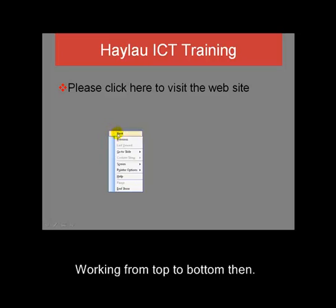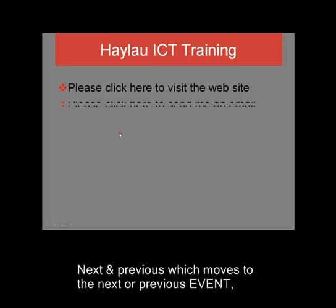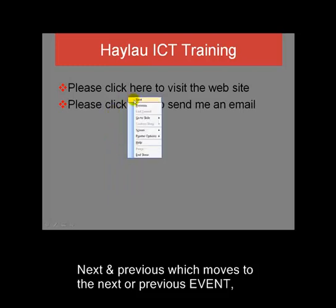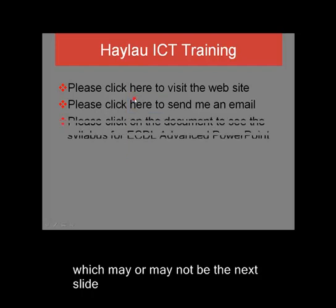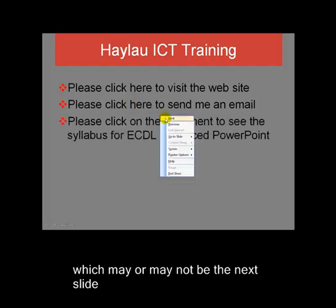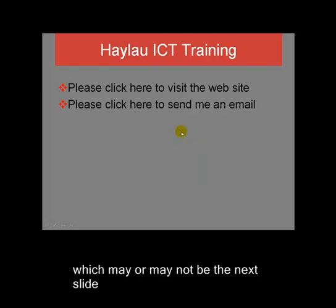There are various options in this context menu and we'll go down them one at a time. The first one, Next, basically gives you the next event in the presentation. I'll click it once and we get the next animation to happen. Sometimes people think this means next slide — it doesn't, although it can be the next slide if that is the next event. Apart from next event, you can go to the previous event if you've clicked over something by mistake, and go backwards and forwards through those events.